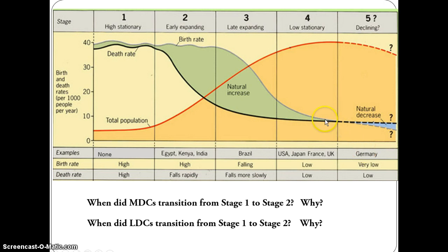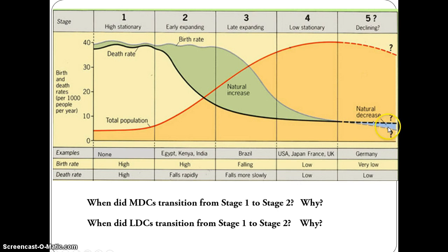As we move into Stage 5 — always a hypothetical stage — the birth rate has actually plunged below the death rate. This is happening in countries where culturally the need for children has diminished as women's roles have increased. Women are becoming managers and CEOs, and there's little interest in having children. Additionally, it's incredibly expensive to live in urban areas, and people want to spend their money on themselves. This is causing countries like Germany, Japan, Singapore, and Hong Kong to have fewer births than deaths, resulting in a natural decrease rate — negative growth.